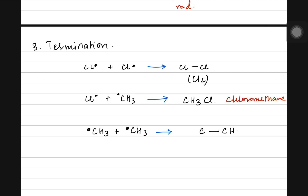When two methyl radicals combine, both carbons join alongside their hydrogens to form C2H6, which is ethane. So it's very much possible to get ethane as a product from methane's free radical substitution.